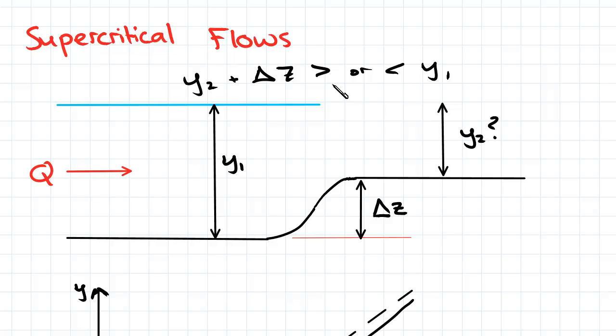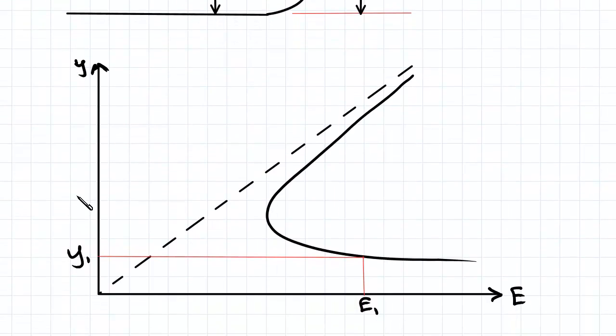Let's say our upstream flow is characterized by having flow rate little q and depth y1. We'll first take a look at supercritical flow, which has fr greater than 1. If we take a look at the specific energy curve we've seen before and plot y1 for a supercritical flow, y1 will be on the bottom branch and have a specific energy value e1.